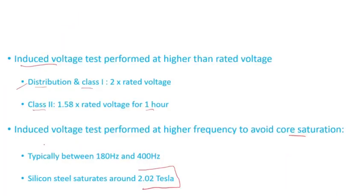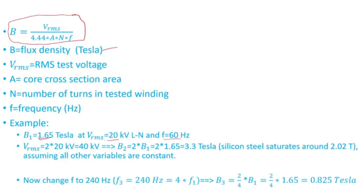...and Class I, you apply two times the rated voltage. So if you increase the voltage to twice the rated voltage, two times 20 kV is 40 kV. The new flux density B₂ is two times B₁, because the only thing I changed is V_RMS. So I multiply by two, and obviously this here is B₁.